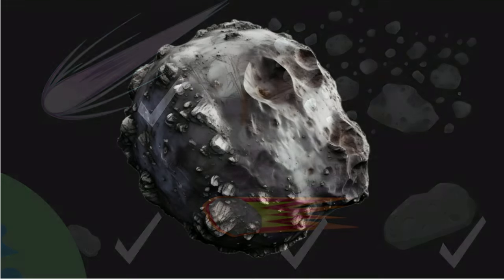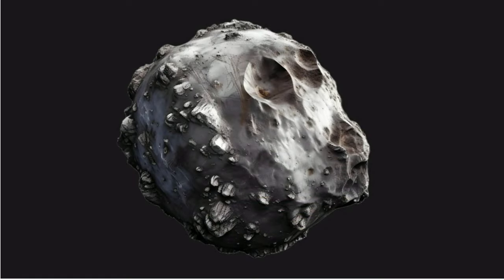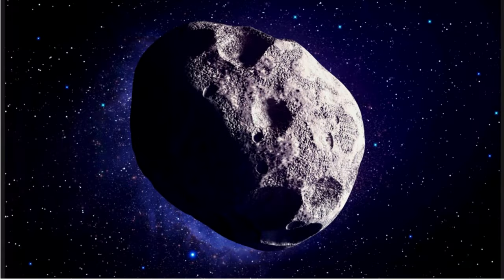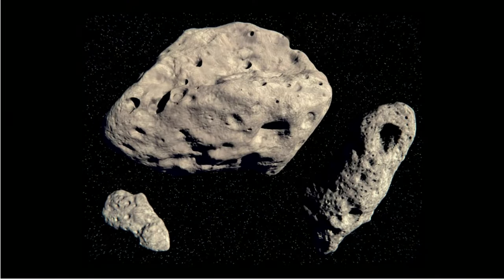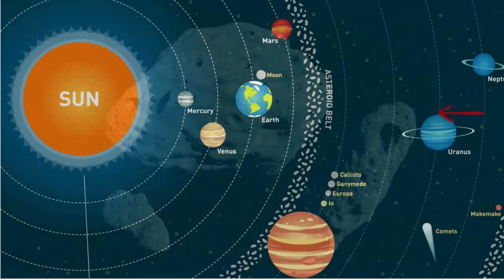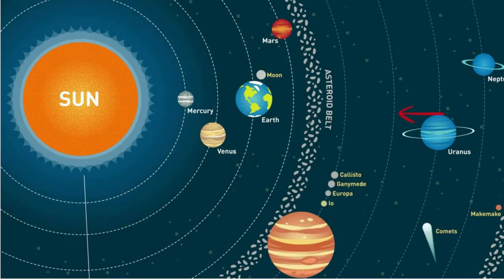An asteroid is an object that is neither a true planet nor a comet that orbits the Sun, and as a result they are considered minor planets. They are rocky, metallic, or icy bodies with no atmosphere. Sizes and shapes of asteroids vary greatly, ranging from 1-meter rocks to almost 1,000 kilometers in diameter. The greatest number of asteroids are located between the orbits of Mars and Jupiter in the main asteroid belt.